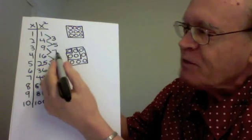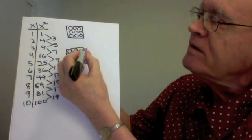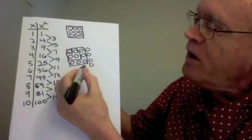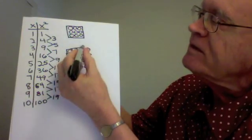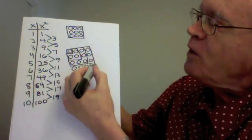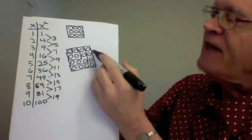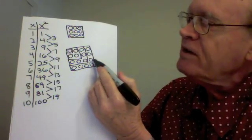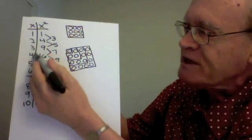And now, to form the next square number, I must add the next L, yet bigger than this one. One, two, three, four, five, six, seven. That forms the next square number, 16. And those seven consist of these three, which do not include the corner, plus these four, which do include the corner. Three plus four is seven.